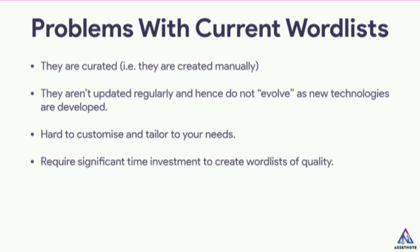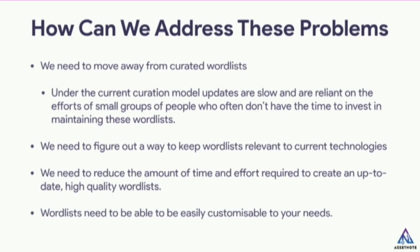So, what are the problems with current word lists? They're curated, i.e. created manually, often by an individual or a group of individuals. So it's down to their time, effort, and experience in terms of quality. They're not really updated regularly and don't evolve as new technologies are developed, at least not as quickly as they should. They're hard to customize because they're just big long text files. And if you're creating them, they require significant time investment to create word lists of any kind of quality.